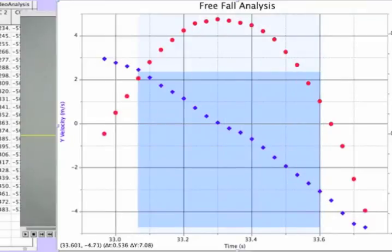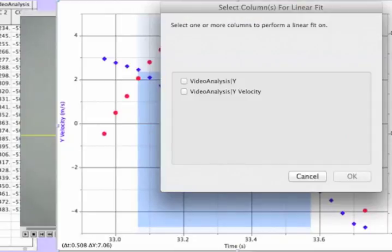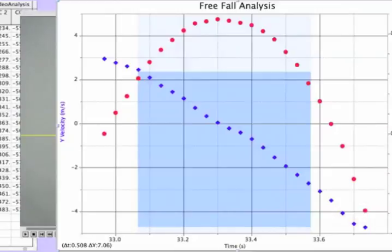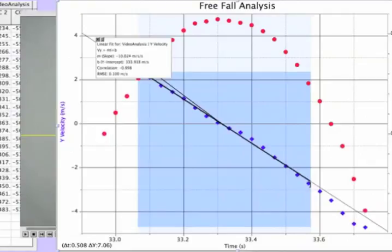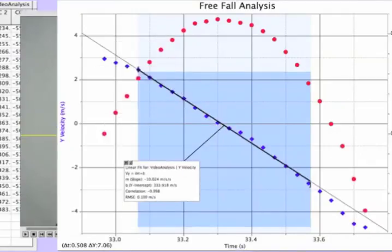So I'm going to select, let's just say these points right here, and I run my linear regression on the y velocity values. And what I end up getting is a slope that's about negative 10.0 meters per second per second. So that's a pretty good estimate of what my acceleration of the free falling ball is as it's moving upwards and downwards through the air.